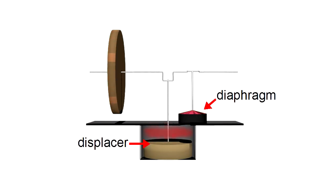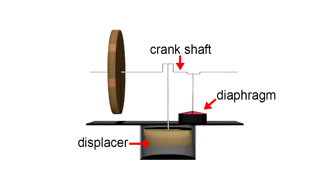So the displacer just moves air around. The expansion caused by the heating and the compression provided by the cooling is what moves the diaphragm, and through this rod moves the crankshaft and makes the whole thing work.